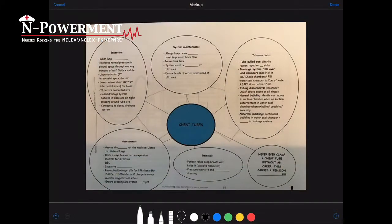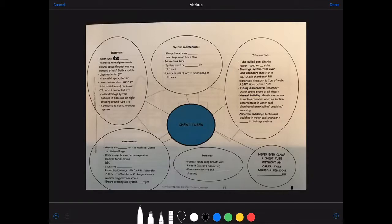Great, now we're going to talk about troubleshooting chest tubes and we're going to go to a page that is out of our textbook and we're going to review this. So the insertion, when the lung collapsed, restores normal pressure in pleural space through a one-way removal of air, fluid or exudate.